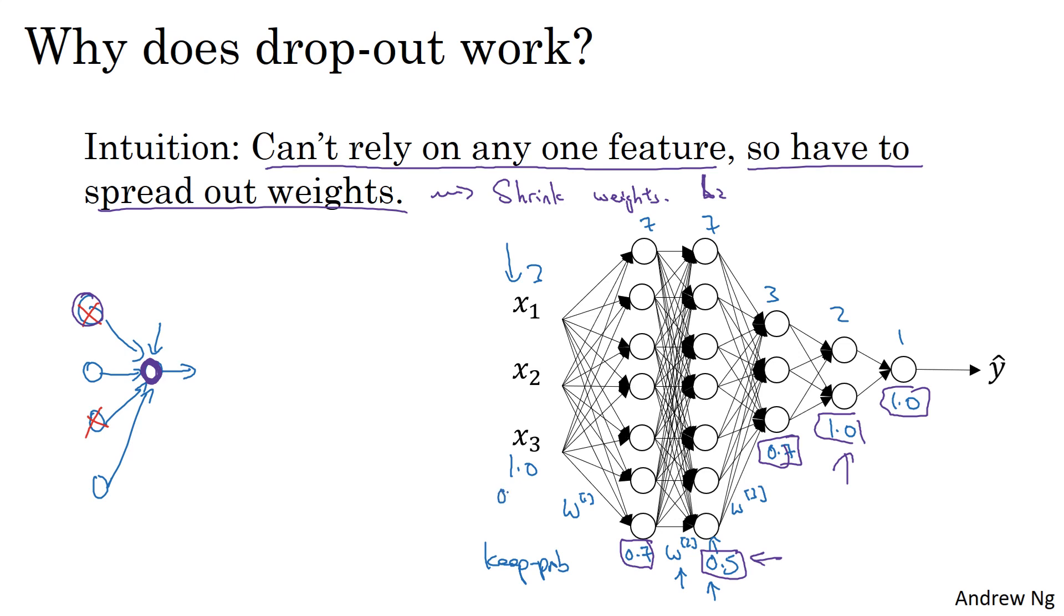And so keep_prop of 1.0 is quite common for the input layer. You might also use a very high value, maybe 0.9. But it's much less likely that you want to eliminate half of the input features. So usually keep_prop, if you apply it at all, will be a number close to one, if you even apply dropout at all to the input layer.